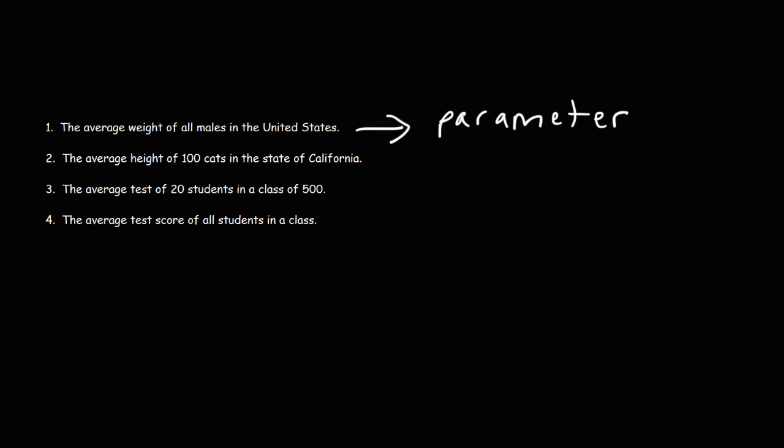Number two: the average height of 100 cats in the state of California. California has millions of cats, so if we're calculating the average height of 100 cats, we're calculating the height of a small subset of the entire population — this would be a statistic. Number three: the average test score of 20 students in a class of 500. The population is the 500, but our study involves only 20 out of the 500, so this would also be a statistic.